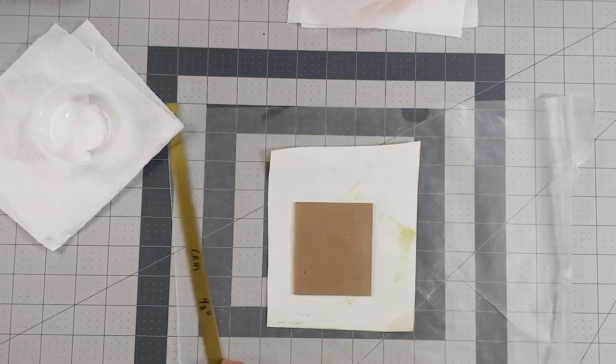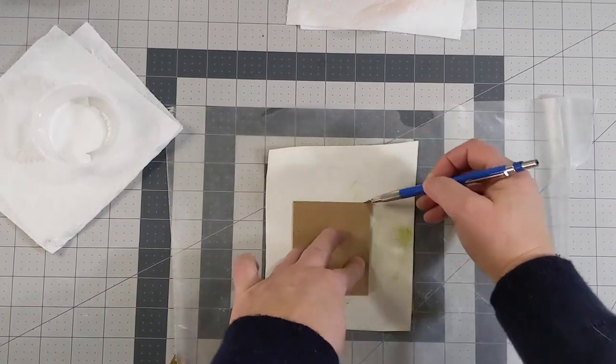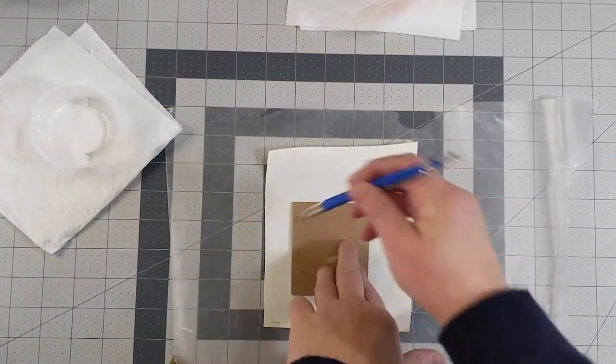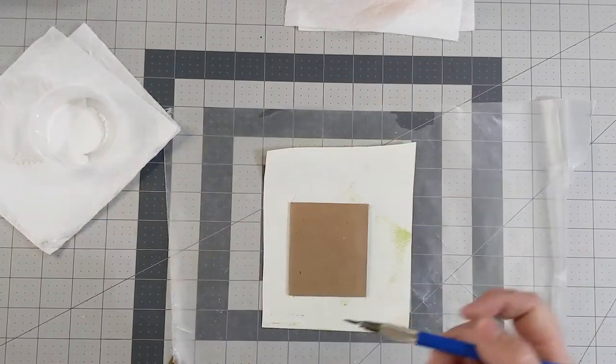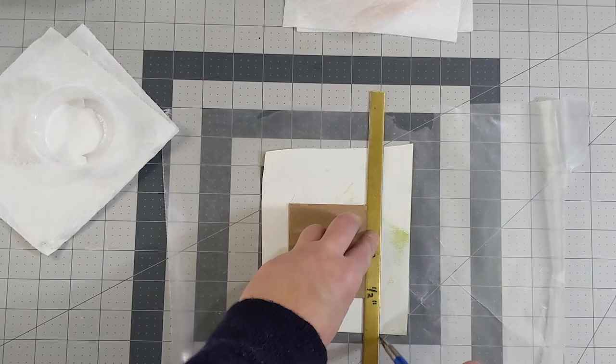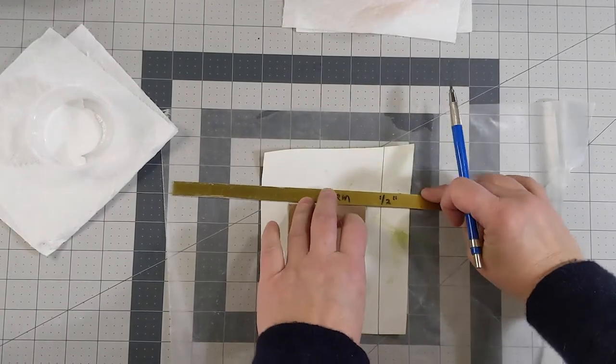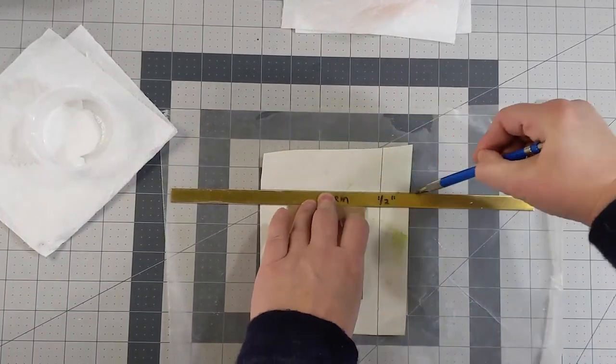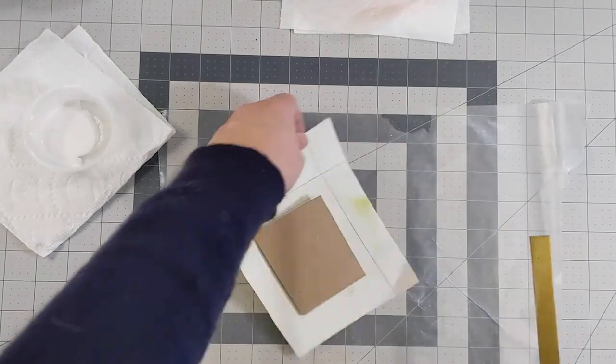Lay one of your cover boards on your cover paper and draw around it with a pencil. Then take your half-inch brass strip and mark all the way around your piece of board so that you'll have your flaps to wrap around the board.